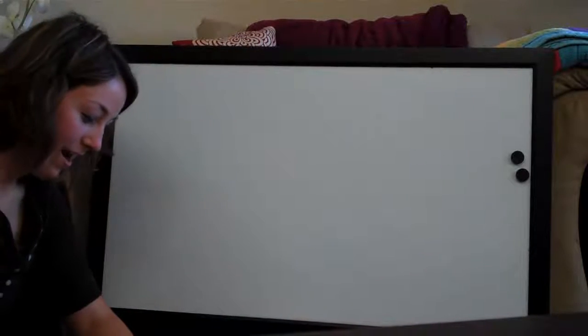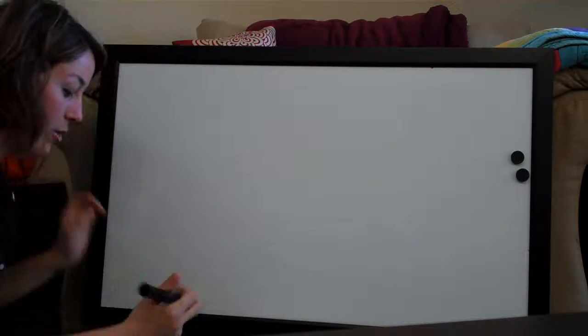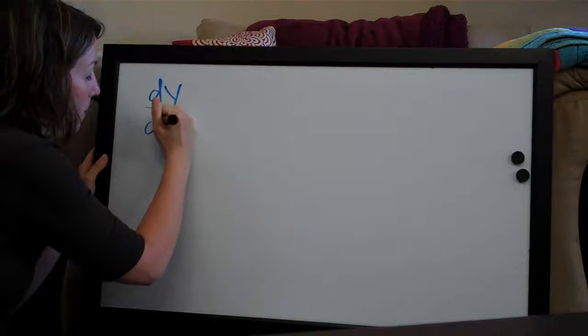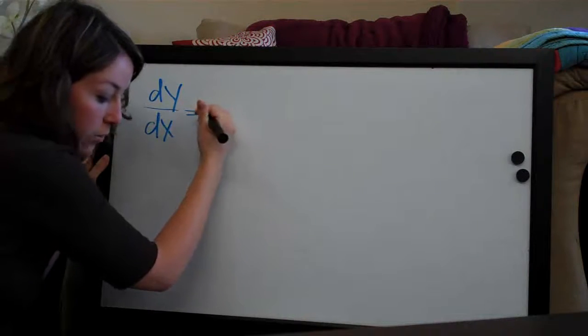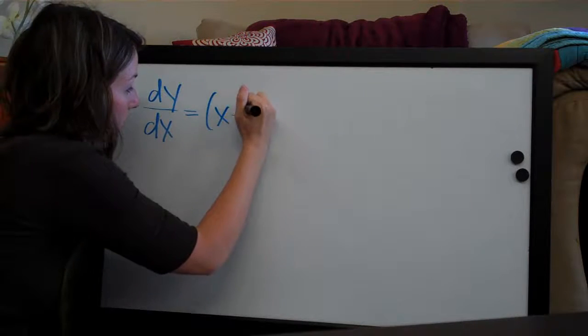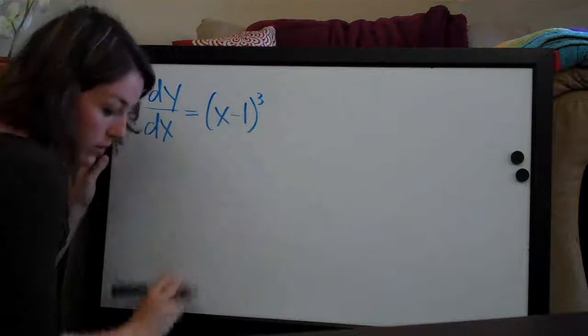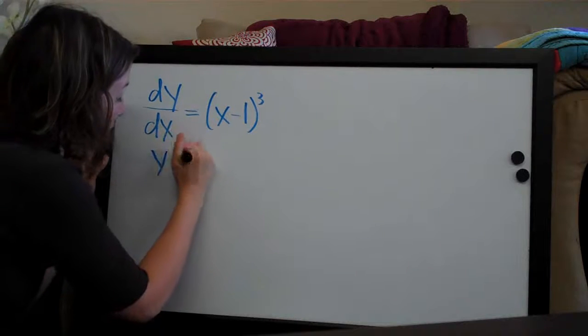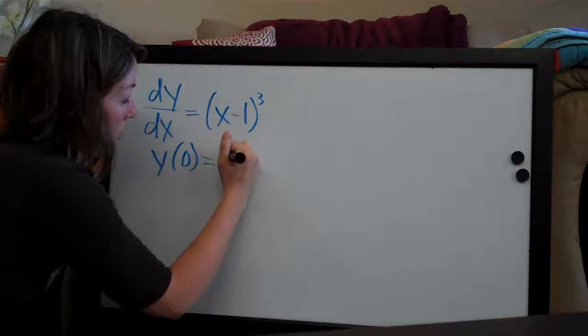Hi! Welcome back! Another initial value problem, this one similar to the last one. dy/dx equals (x-1)³ and the initial condition is y(0) = 2.